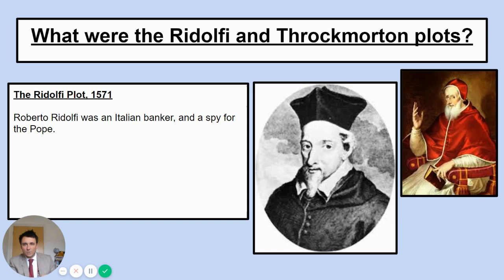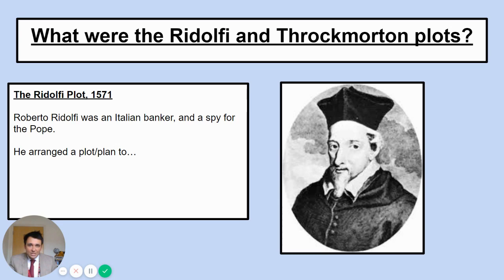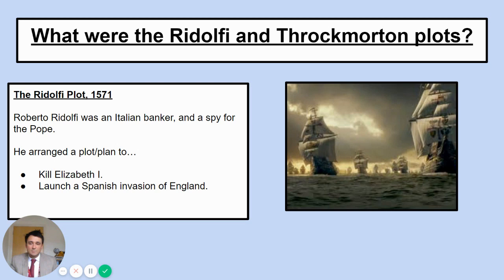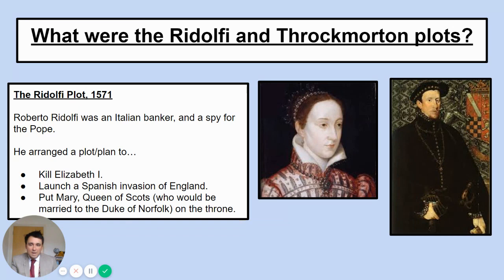So the Rodolfi plot first of all, in 1571. Roberto Rodolfi was an Italian banker and a spy for the Pope. He was arranging a plan or plot to do three things: number one, kill Elizabeth the First — have her assassinated; number two, to launch a Spanish invasion of England; number three, to put Mary Queen of Scots — who would then be married to the Duke of Norfolk — on the throne. Mary Queen of Scots is always heavily involved; she is the Catholic heir to the throne.